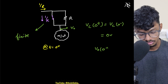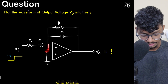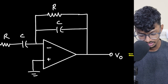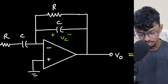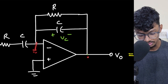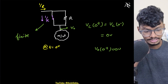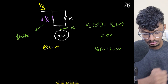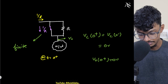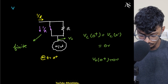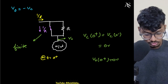One important point to establish: this node is grounded and this point is Vc, and this point is Vo. Since the bottom node is grounded, Vo = −Vc. So I'll just compute for Vc and then take the negative of Vc to get my output voltage. Initially Vc is zero volts.